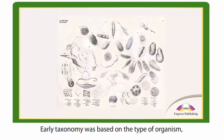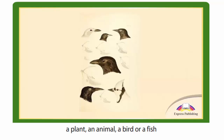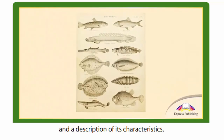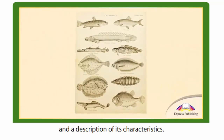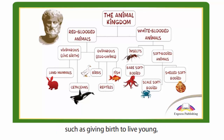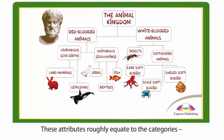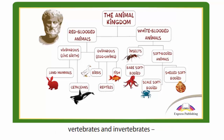Early taxonomy was based on the type of organism — a plant, an animal, a bird, or a fish — and a description of its characteristics. Aristotle began to classify living organisms based on their attributes, such as giving birth to live young, laying eggs, and having blood or not having blood. These attributes roughly equate to the categories mammals, non-mammals, vertebrates, and invertebrates that we use today.